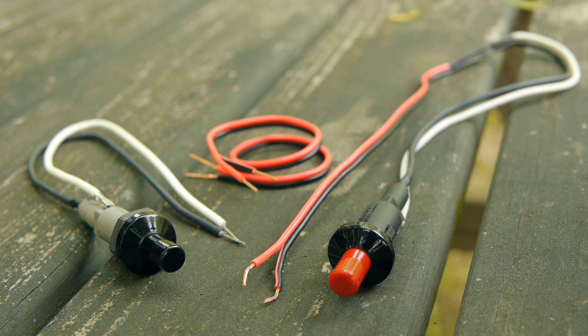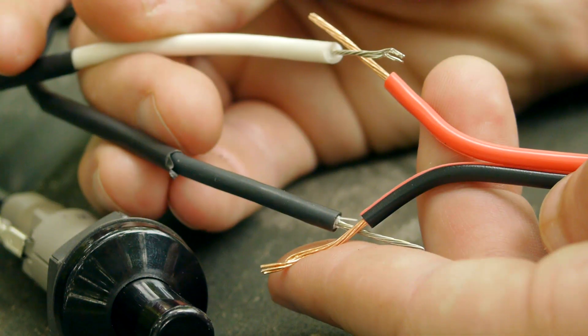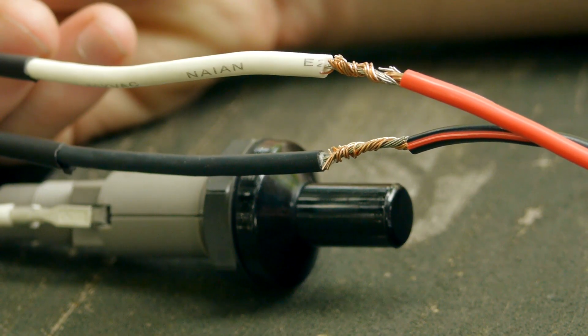The wires that come stock with standard BBQ igniters are a bit shorter than I would like for this project, so I'll make them longer by splicing on another 12 inches of spare wire.